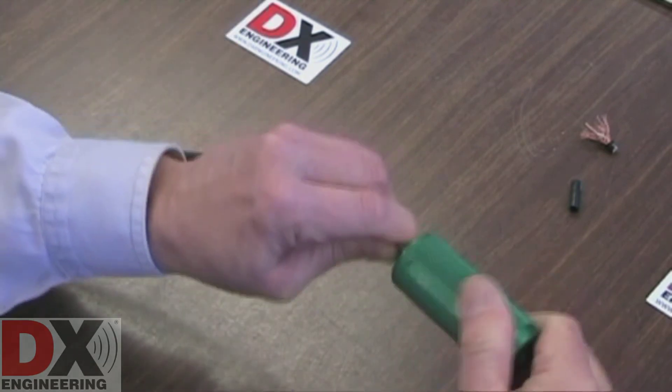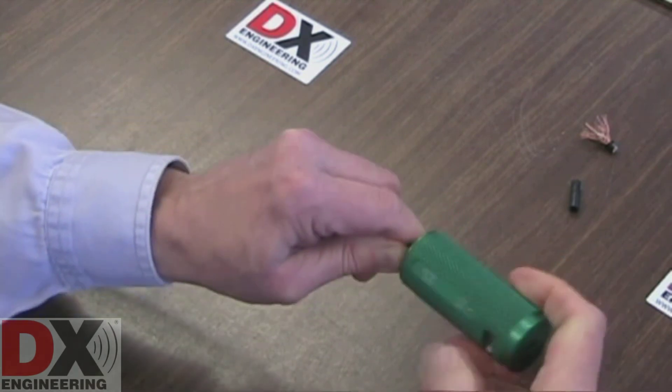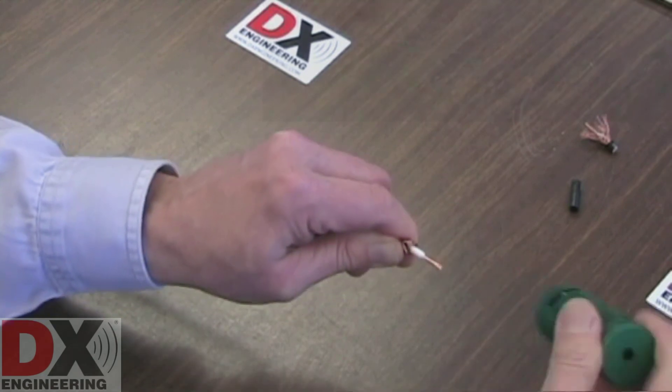The white center insulation will be ejected from the tool as it cuts. You will feel the tool spin free when the cutting is complete. Remove the coaxial cable.